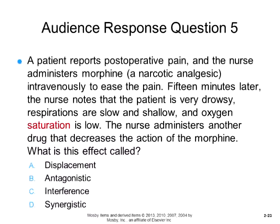If a post-op patient receives morphine intravenously for pain and 15 minutes later the nurse finds the patient very drowsy with slow, shallow respirations and low oxygen saturation, and the nurse administers another drug that decreases the action of the morphine — this effect is called antagonistic.